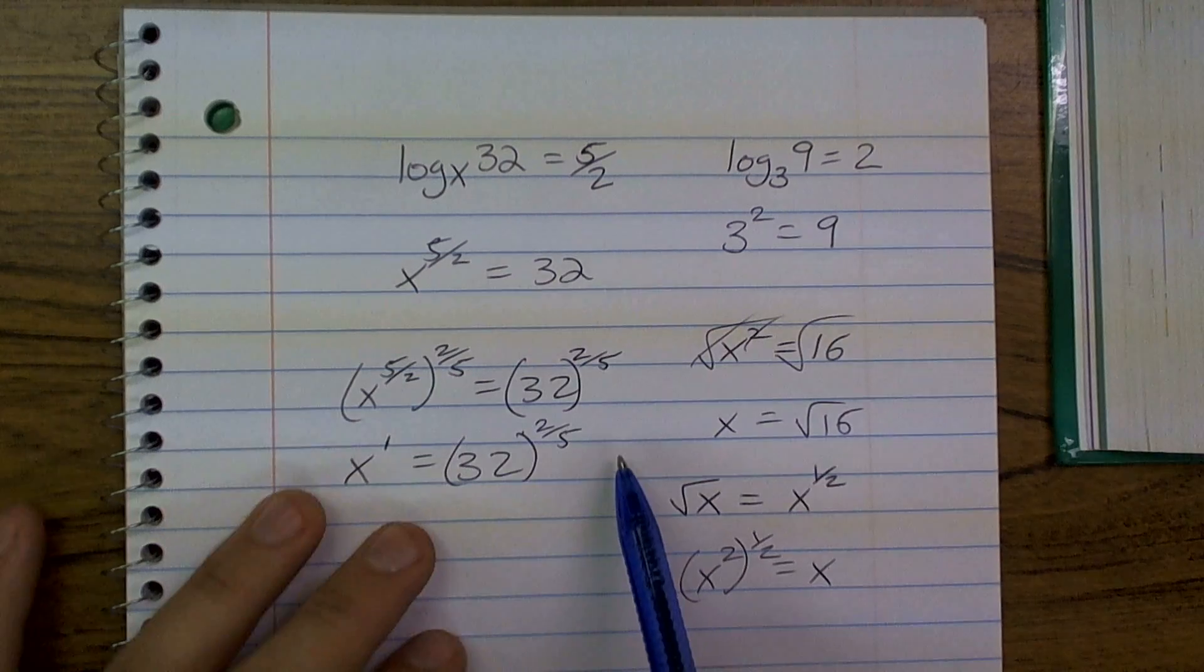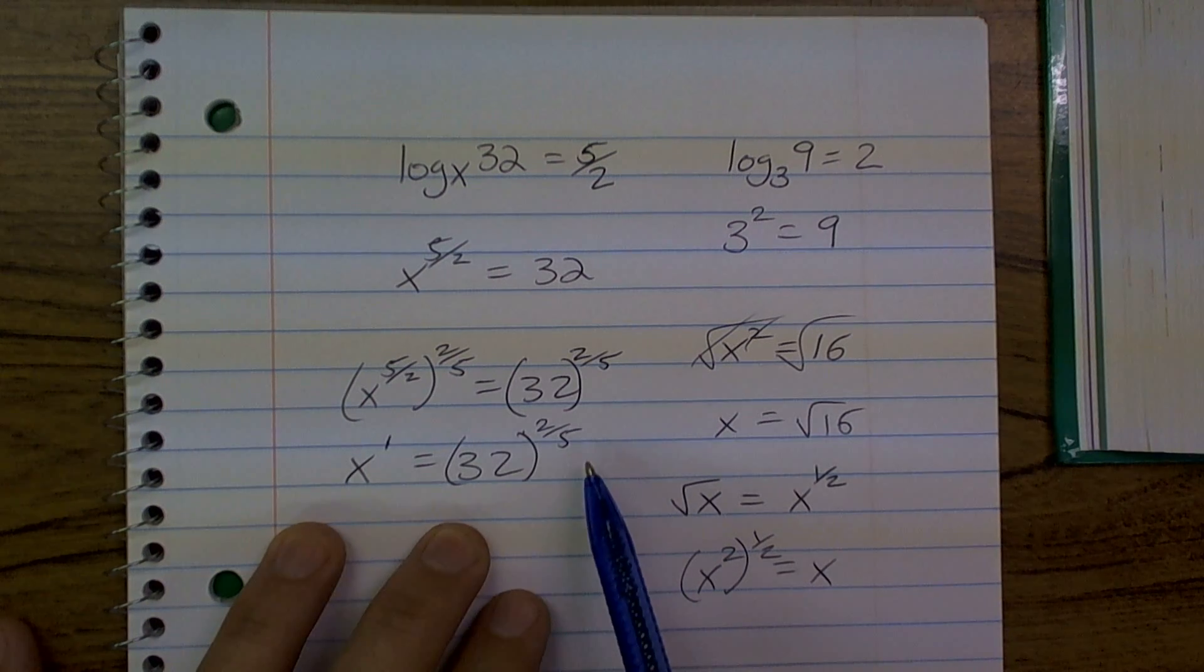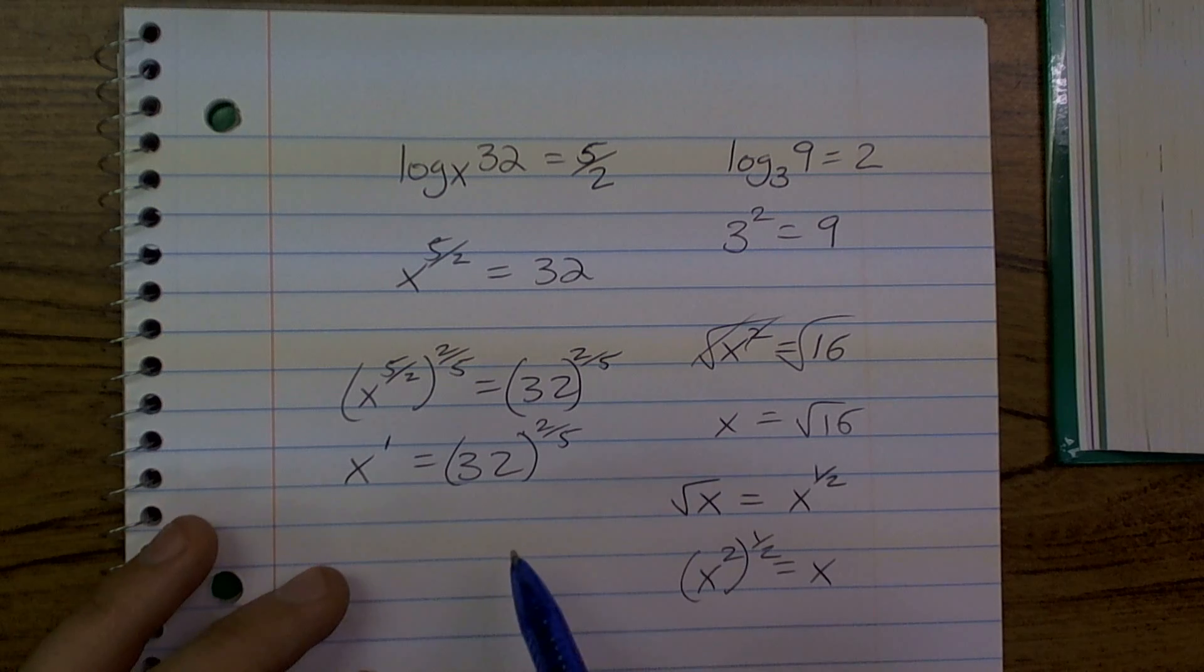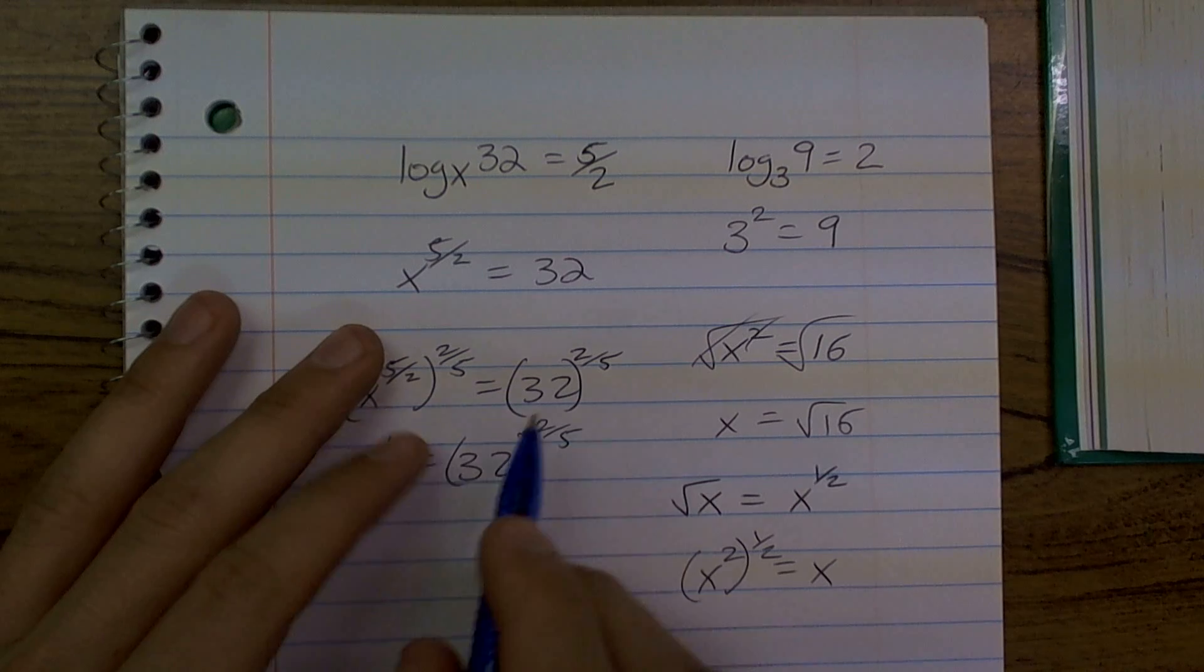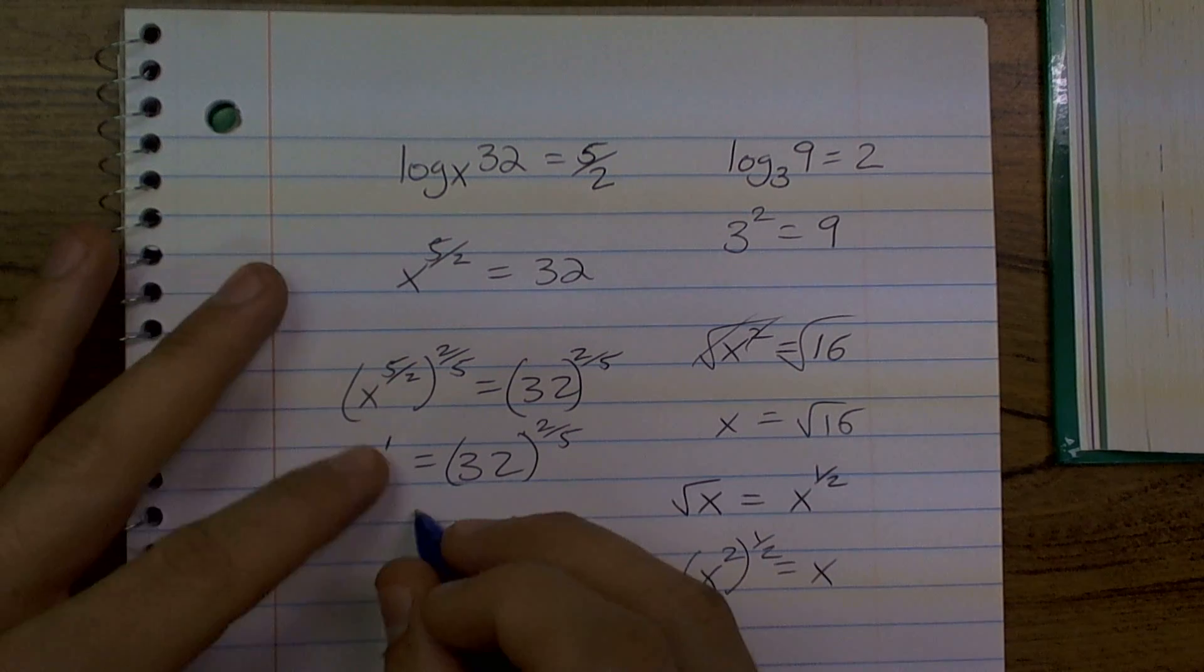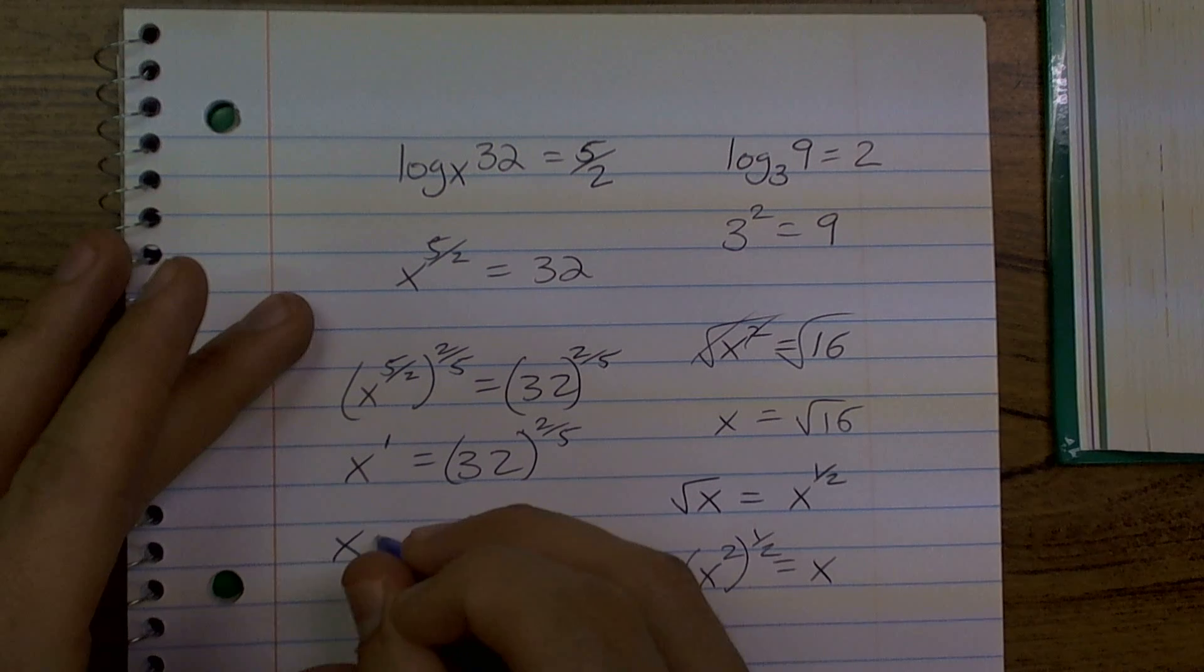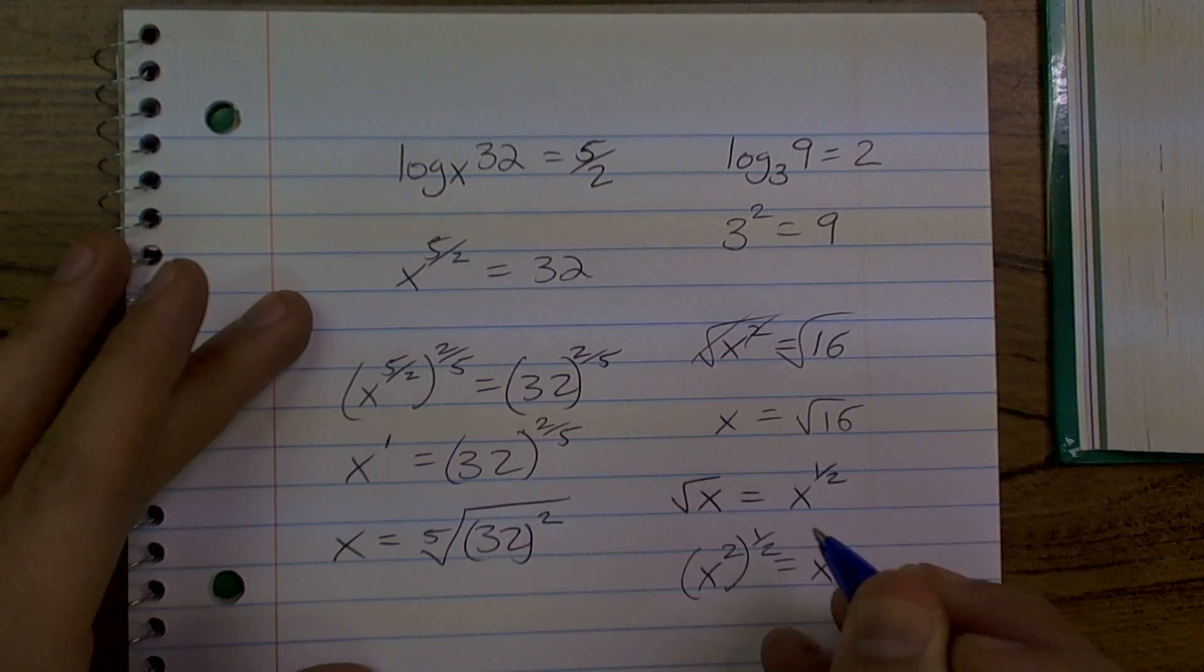Now, you might say, well, you didn't really improve too much, because now I still have 32 raised to the 2 over 5. So, what am I going to do now with this? Well, you could just use your calculator and say the 5th root of 32 squared. That's perfectly fine.